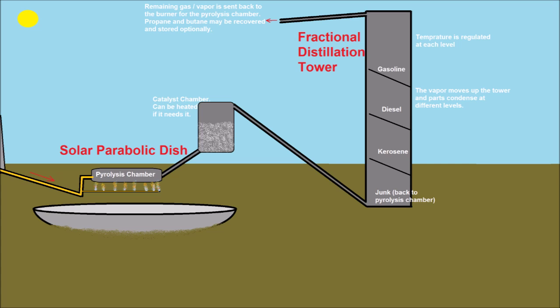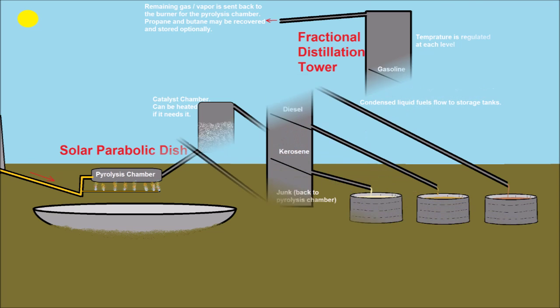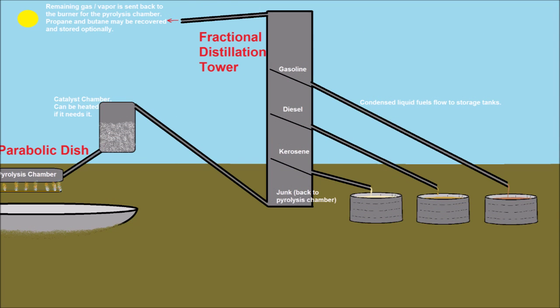From the catalyst chamber, the vapor flows into a fractional distillation tower. Each type of fuel has a different boiling point, so different levels of the distillation tower can be maintained at a certain temperature to allow one fuel to condense and everything lighter stays vapor and continues up the tower. The parts that won't condense, like propane, hydrogen, etc., can be compressed and stored or sent to the gas burner for heating the pyrolysis chamber.